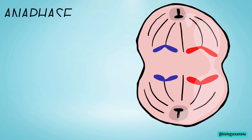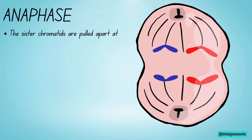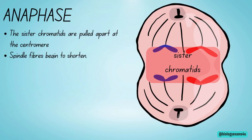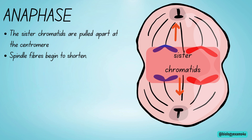During anaphase, the sister chromatids are pulled apart at the centromere and moved toward opposite poles of the cell. Spindle fibers begin to shorten. This separation ensures that each new daughter cell will receive an identical set of chromosomes.